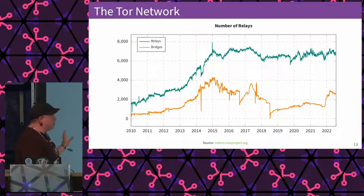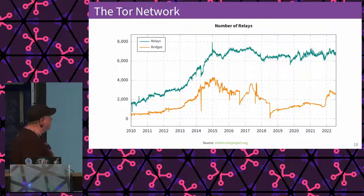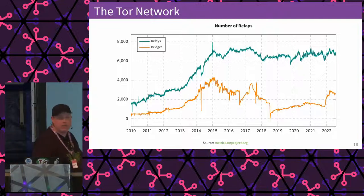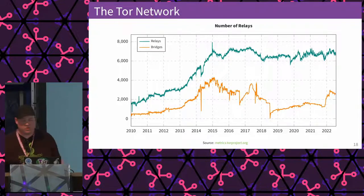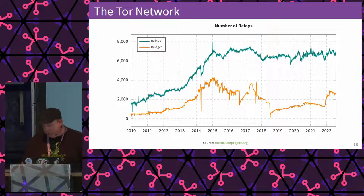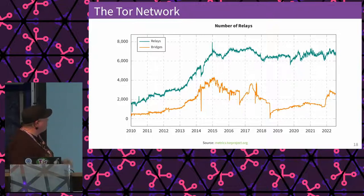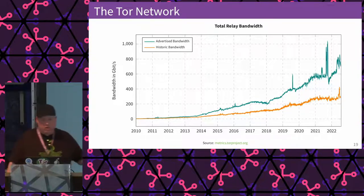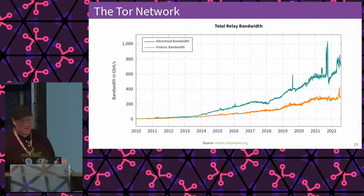Looking at the number of relays over time, we can see that specifically after the Snowden revelations in the summer of 2013, the curve goes up and then reaches a plateau where we are today. The bridges are a bit laggier, but we recently ran a campaign to get more bridges, and a lot of people in 2022 have started running bridges. Even though we've hit a sweet spot between 6,000 and 7,000 relays, the bandwidth of the network continues to grow as the internet in general gets faster.